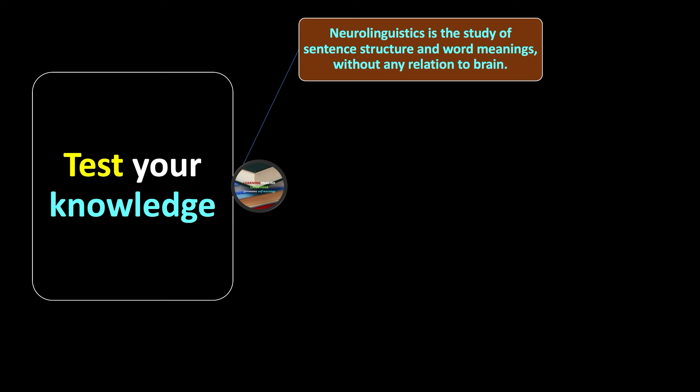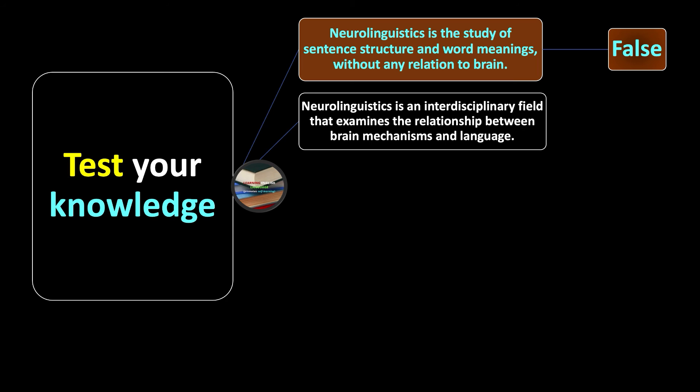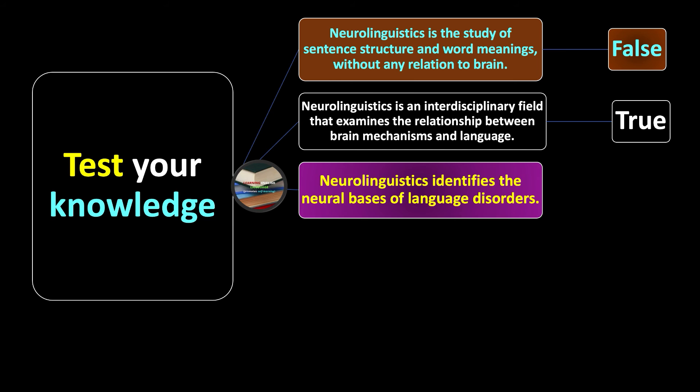Let's test your knowledge. First: neuro linguistics is the study of sentence structure and word meanings without any relation to brain — true or false? The answer is false. Second: neuro linguistics is an interdisciplinary field that examines the relationship between brain mechanisms and language — true or false? That is true. Third: neuro linguistics identifies the neural basis of language disorders — true or false? That is true.